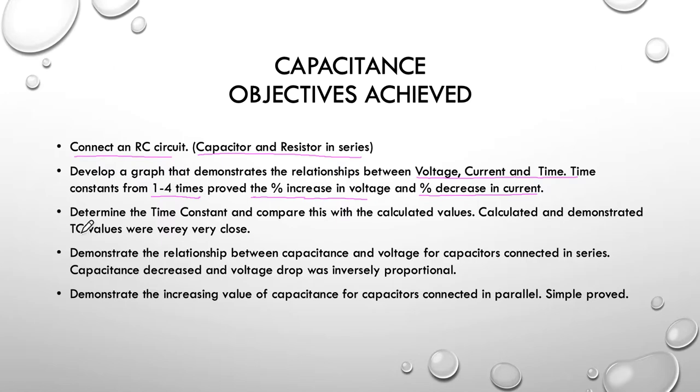Step 3 was to determine the time constant and compare this with the calculated values. So, we calculated the time constant at about 47 seconds and applied that through our graph. And it was very close. In actual fact, it was so close to me it was spot on. So, we were able to demonstrate that the time constant is equal to R multiplied by C.